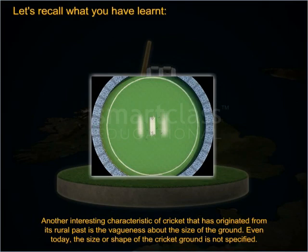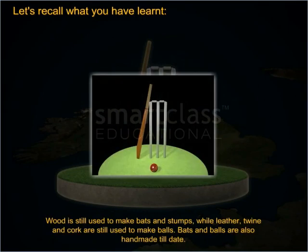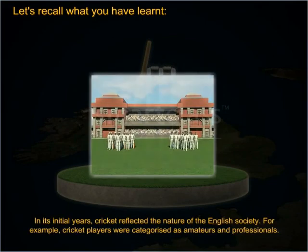Even today, the size or shape of the cricket ground is not specified. Wood is still used to make bats and stumps, while leather, twine and cork are still used to make balls. Bats and balls are also handmade till date. In its initial years, cricket reflected the nature of English society. For example, cricket players were categorized as amateurs and professionals. Amateurs tended to be batsmen while bowling and fielding was the job of professionals.